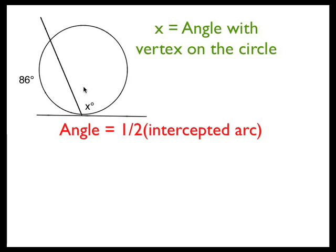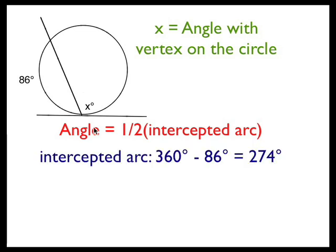What we can do is subtract the 86 from 360 because all the way around the circle is 360 degrees, and we would have the major arc of 274 degrees.